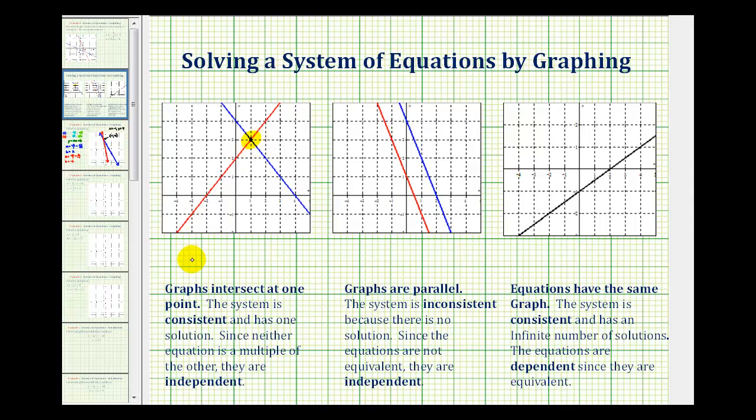So if two lines intersect, we have one solution. And we say the system is consistent and the equations are independent.